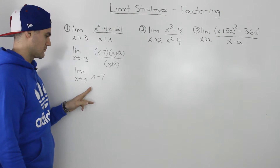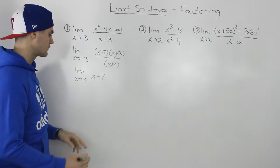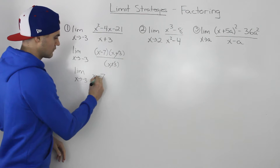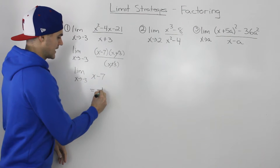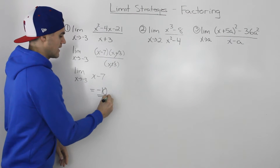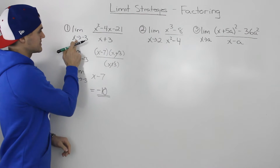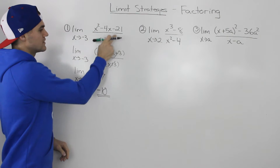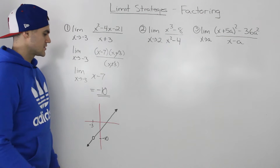So we're left with the limit as x goes to negative 3 of x minus 7. With the remaining expression, we can make the substitution of negative 3 for x. So negative 3 minus 7 gives us negative 10. That is our final answer — the limit as x approaches negative 3 of this expression is equal to negative 10.